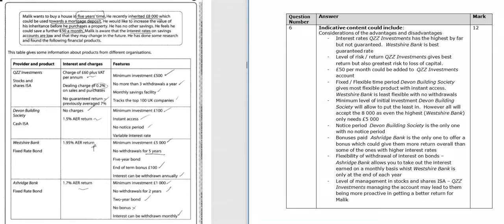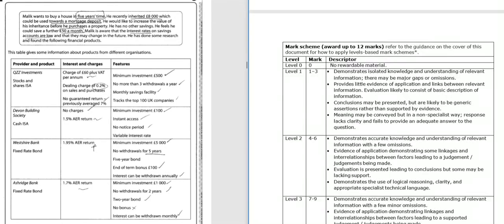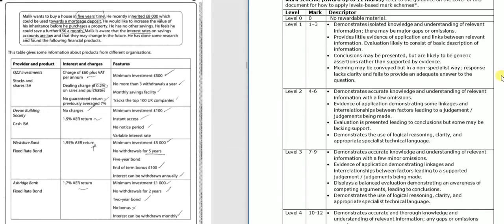If we come down to the second page of our mark scheme, we can see that this student is top level two in terms of their response. They've demonstrated accurate knowledge and understanding of relevant information with fewer omissions. There's evidence of application — they've actually applied this information, which is really important. The evaluation is presented leading to conclusions, but some may be lacking support. It also demonstrates the use of logical reasoning, clarity, and appropriate specialist language.